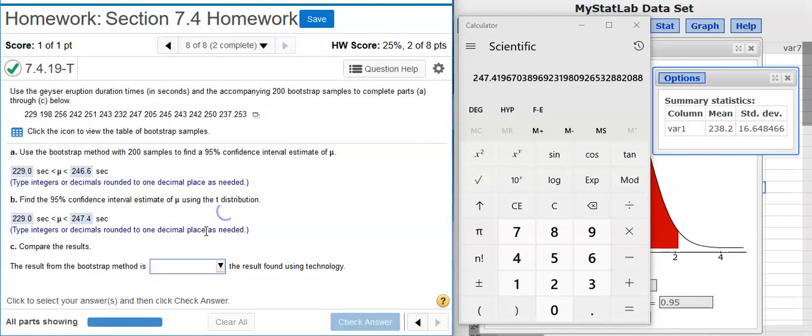And now part C asks us to compare the results. So if we look, our upper limits here in this case are exactly the same. Here, excuse me, the lower limits are exactly the same. The upper limits, they're not exactly the same, but they're not that far apart either. They're actually pretty close to each other. So we could say that the results are reasonably close to one another.